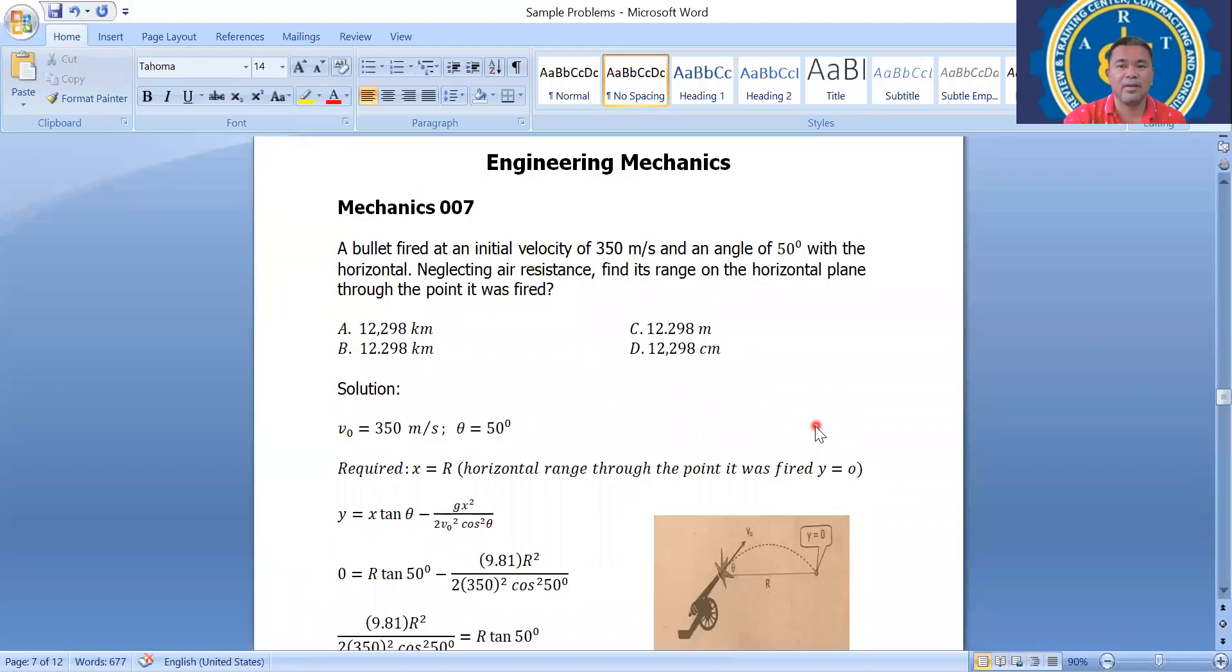Today we have another problem for Engineering Mechanics 007. A bullet fired at an initial velocity of 350 meters per second at an angle of 50 degrees with the horizontal. Neglecting air resistance, find its range on the horizontal plane through the point it was fired.